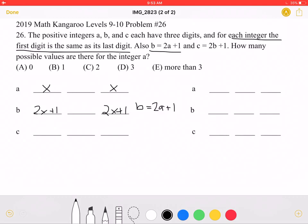We also know that C is equal to 2 times B plus 1. So, if we take 2X plus 1, multiply it by 2, and add 1, we will get 4X plus 3. So, 4X plus 3 is the last digit, but must also be the first digit.